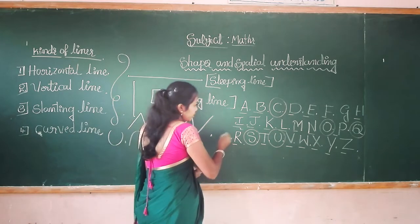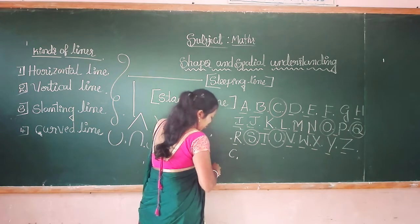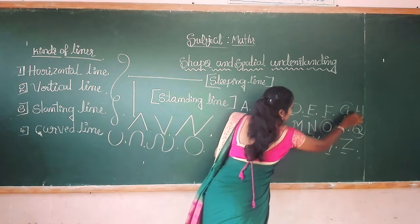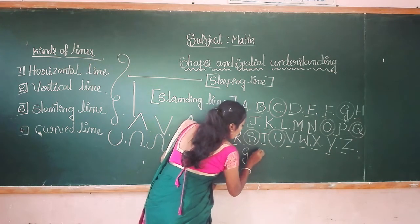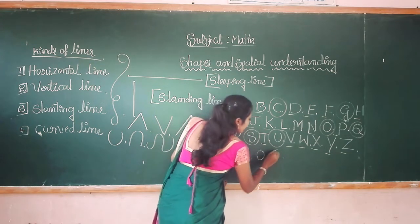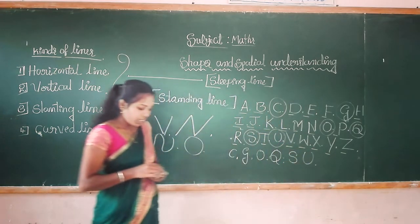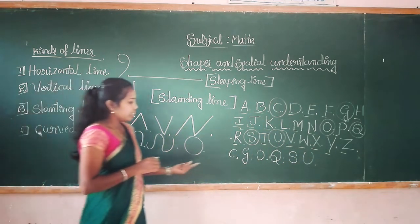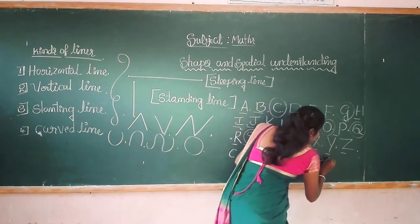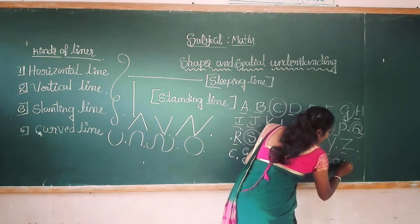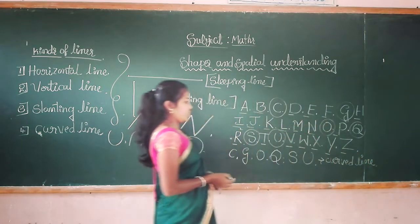Let us write the letters: C, G, O, Q, S, U. Now you can easily find out that these letters have curved lines. Which line? Curved line.